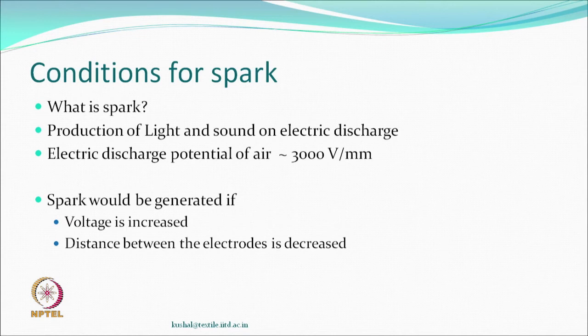Spark would be generated if voltages are increased beyond the threshold level and if the distance between electrodes is decreased. If you make the gap zero — like touching the electrodes — that is short-circuiting, and lot of damage can happen. When the gap is not zero, certain voltages are required for spark — which is electrical discharge.